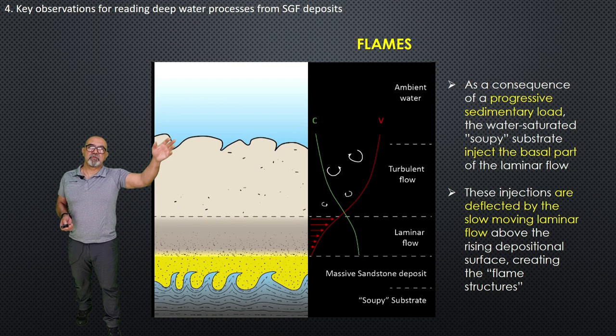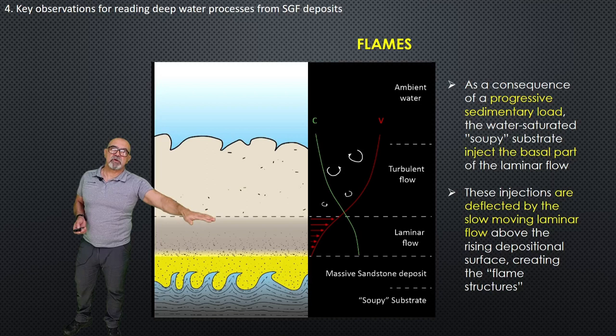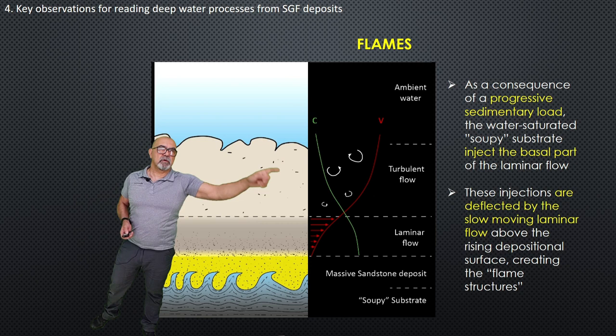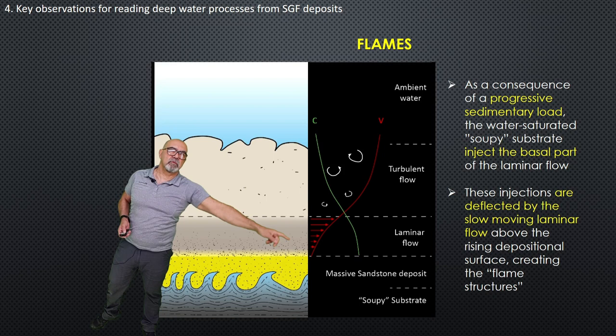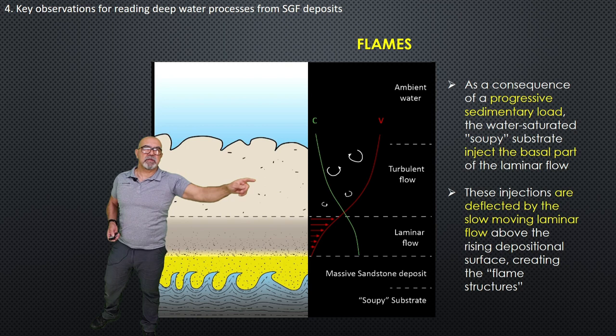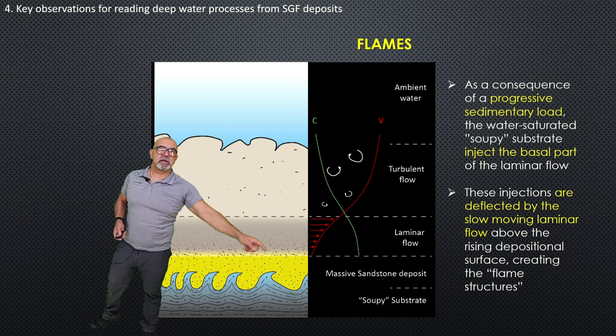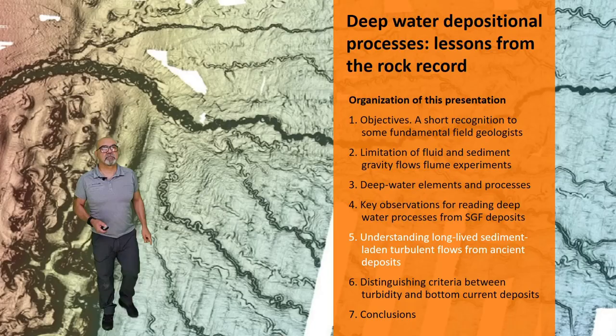The turbulent flow continuously provides fine-grained sediment. The sediment concentrates in the lower part — as shown in the diagram from Neller and Brane — where concentration in green is increasing downward through the flow while velocity is decreasing to zero at the deposit. This lower part has high concentration and low velocity, creating the conditions of a laminar flow.